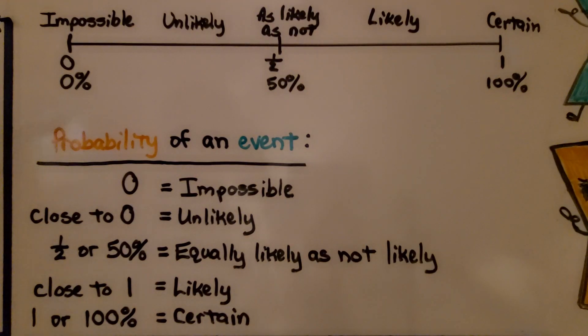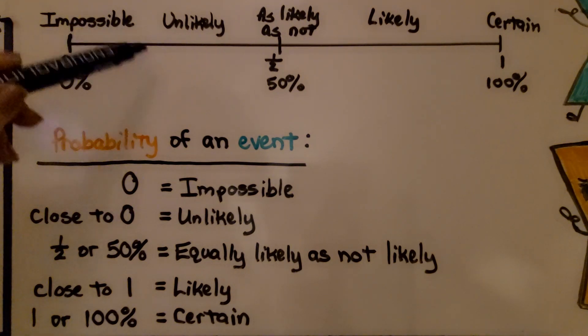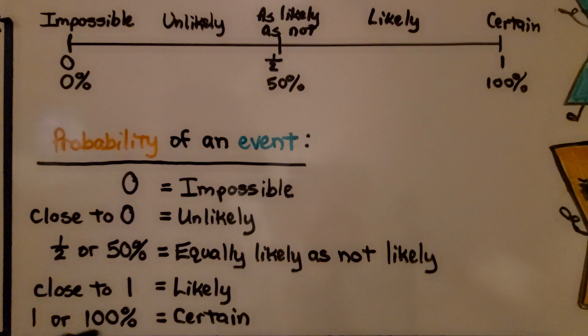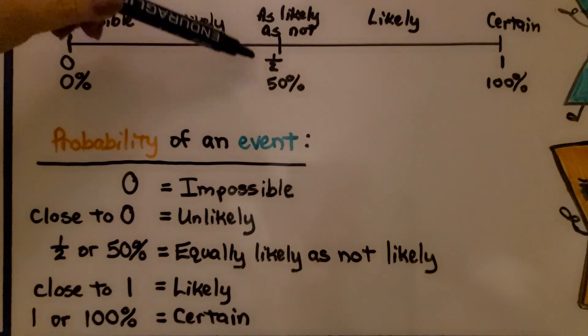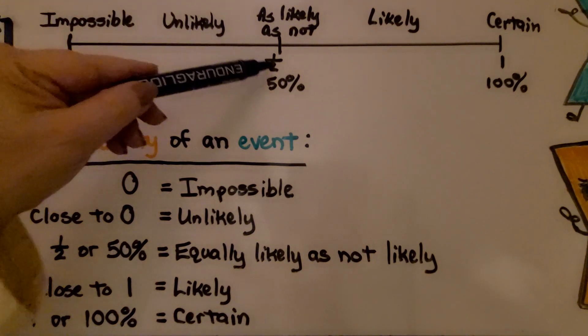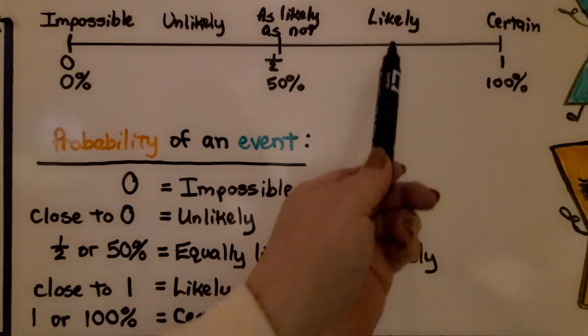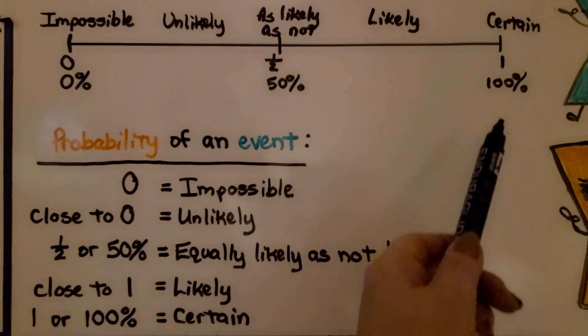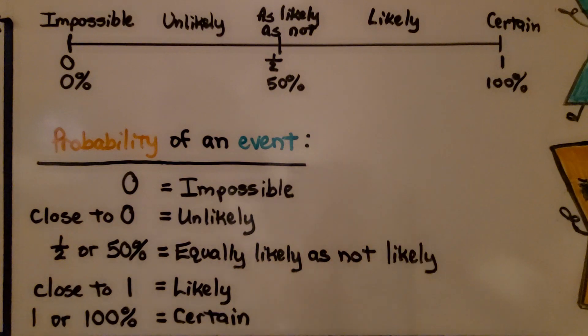So on our number line, 0 is impossible. If it's close to 0, it's unlikely. If it's half or 50%, it's equally likely as not likely. And if it's close to 1, it's likely. And if it's 1 or 100%, it's certain.